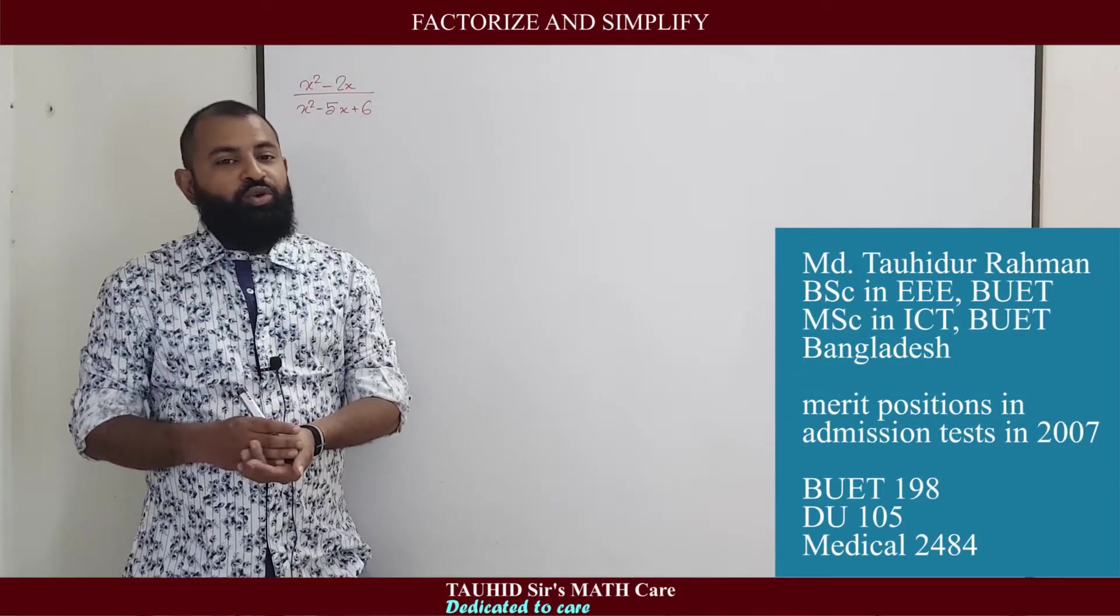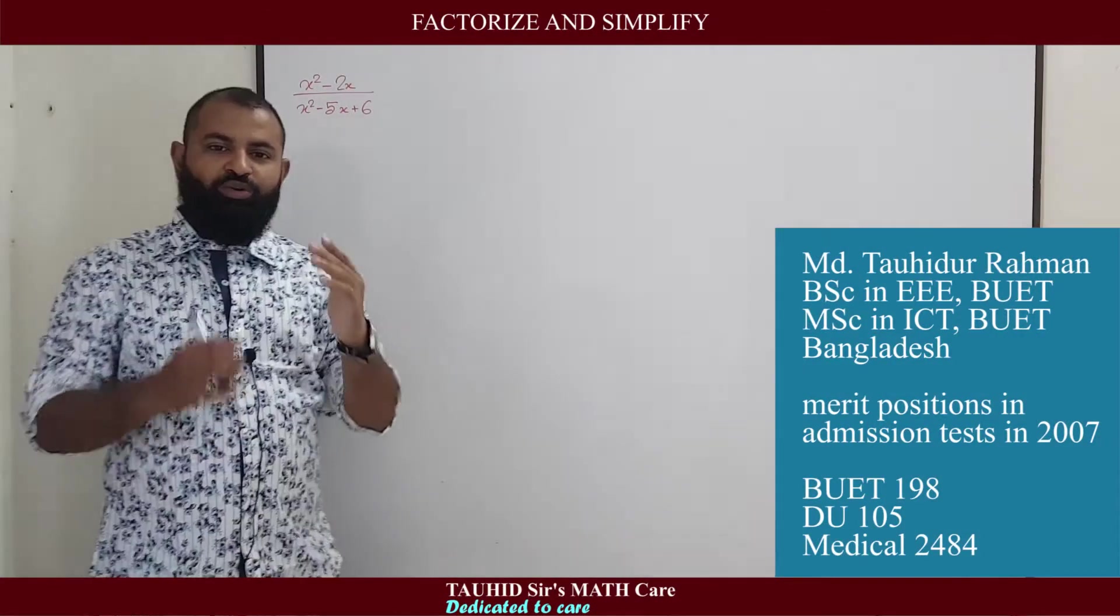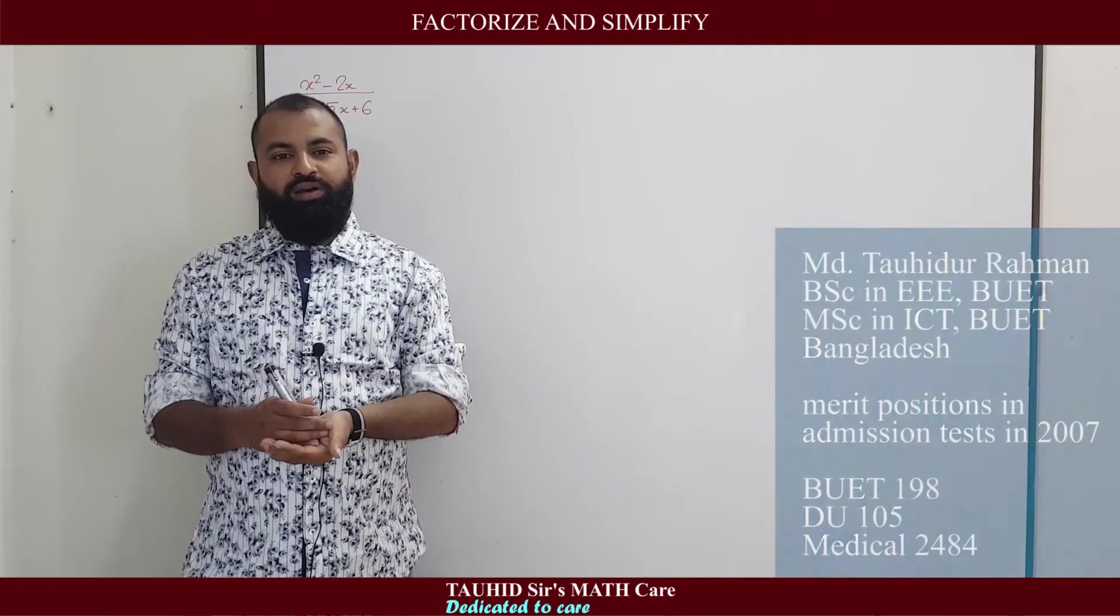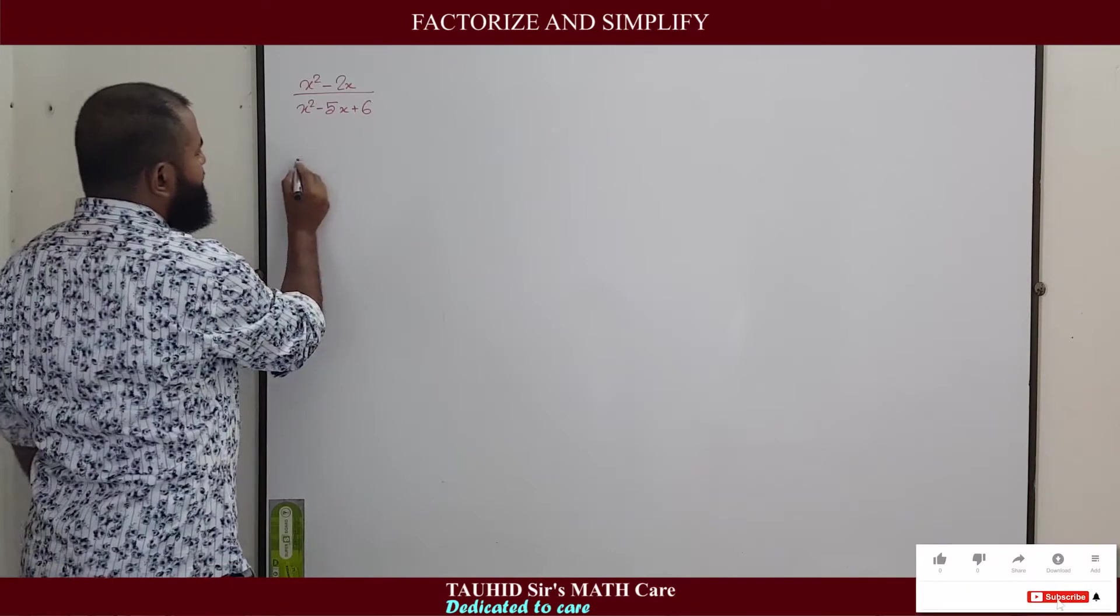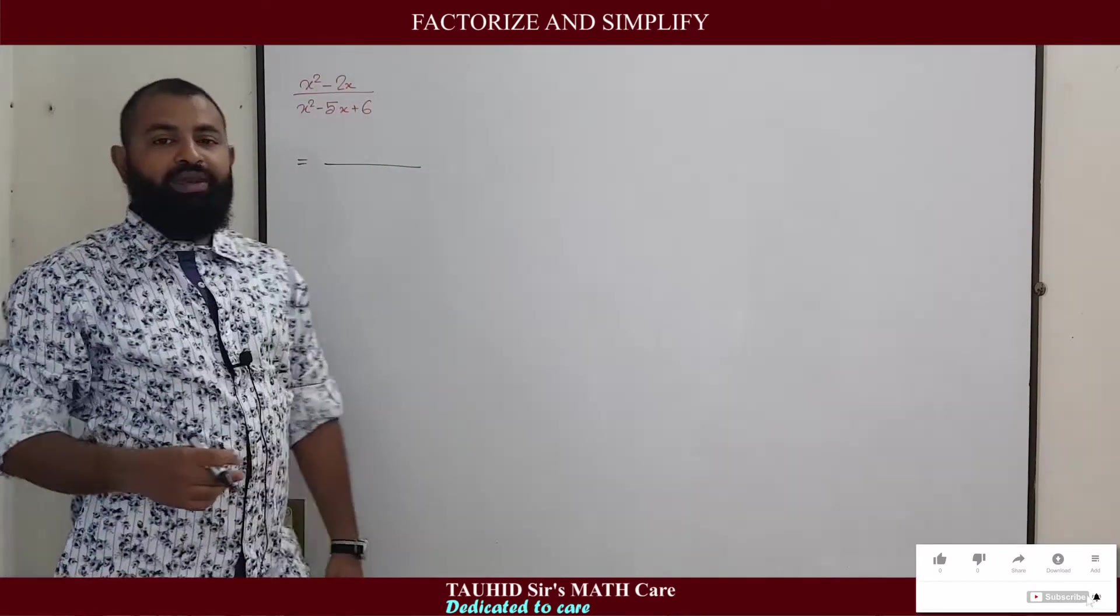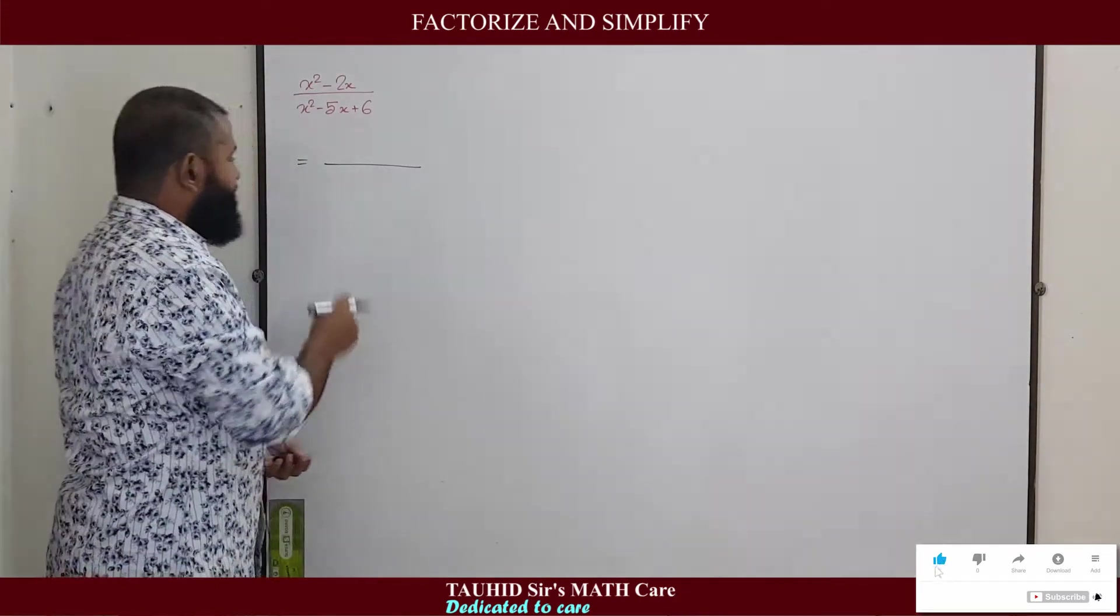This type of question frequently occurs in your O level exam: factorize and simplify. You are given an expression and asked to simplify it. So what to do here? We need to factorize both the numerator and denominator so that we can divide something by something. In the previous...